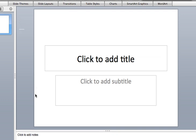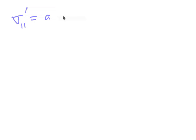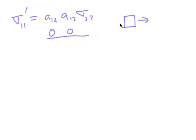Sigma_11 prime is going to have A_12 times A_12 times sigma_22. Looking back at the rotation matrix, A_12 is equal to zero. So sigma_11 prime is equal to zero — and that makes sense. We had our element with a stress applied in the y direction, and all we're doing is rotating about x. There's no way for this stress to end up with any component in the x direction, so this term should be zero.